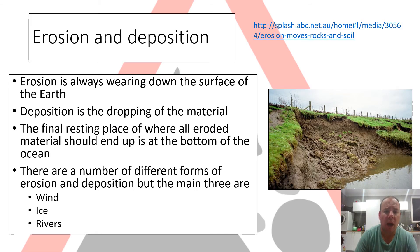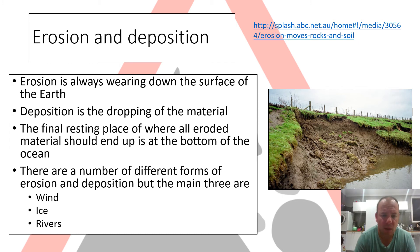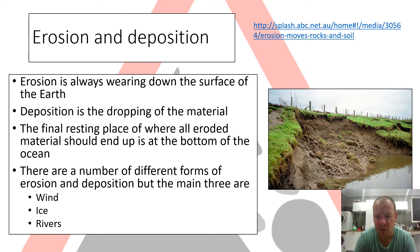Erosion is the wearing down of material. As you can see in this picture, this is a meander — a bend in the river — showing erosion always wearing down the Earth's surface. Deposition is when material is dropped off, forming new land when the force of water can no longer carry its load. There are many different agents of erosion and deposition depending on how water moves — wind, ice, and rivers all play a role.